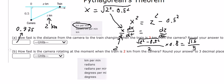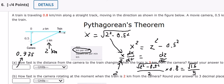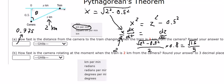The next one: How fast is the camera rotating at the moment when the train is 2 km? So now we have this angle in here, and we put about theta. And we know this is about a right triangle, and we can use tan theta equals opposite divide adjacent, so we got about S divided by 0.5, so we got about 2S.